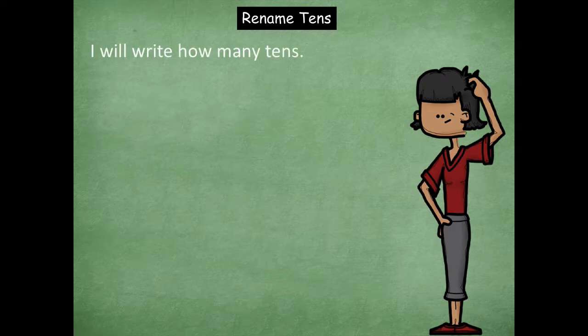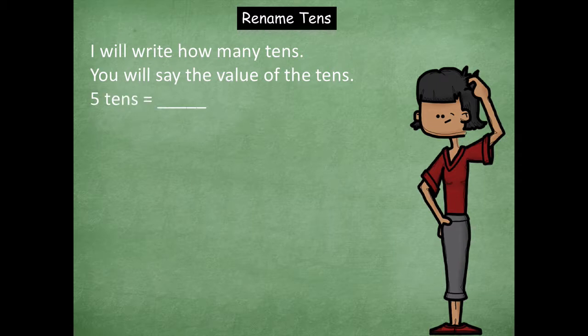So remember I'm going to write how many tens and you'll say the value of the tens. So five tens equals and you would say 50. Here's where we're going to step it up a little bit. In the last lessons we've done some with two digit tens. But now we're going to make the numbers even larger.